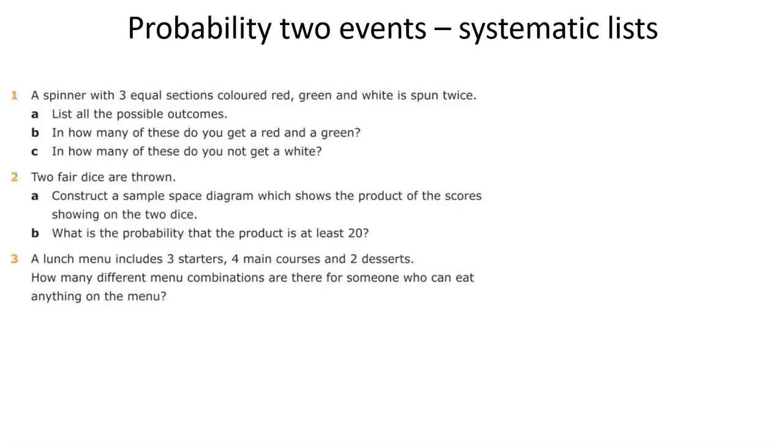A spinner with three equal sections coloured red, green and white is spun twice. List all the possible outcomes. Well, the first spin could be red, green or white, and then the second spin, again, could be red, green or white, because they're independent events.